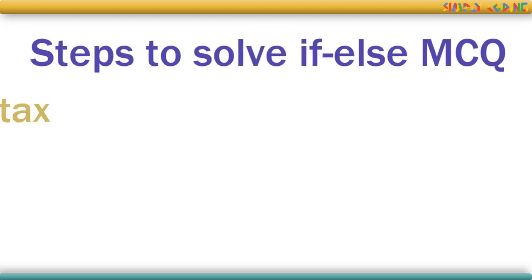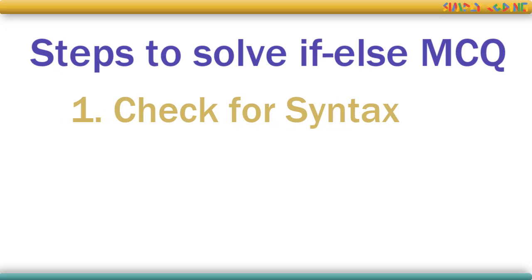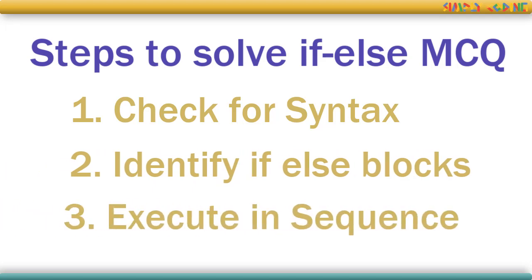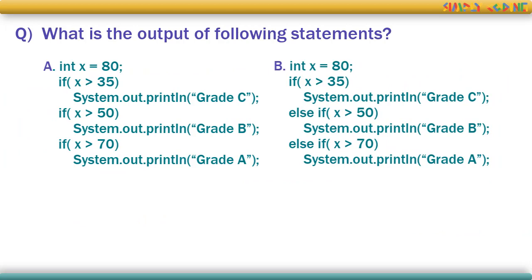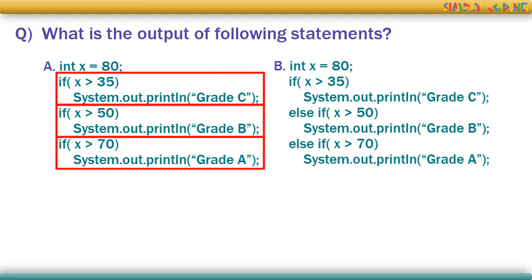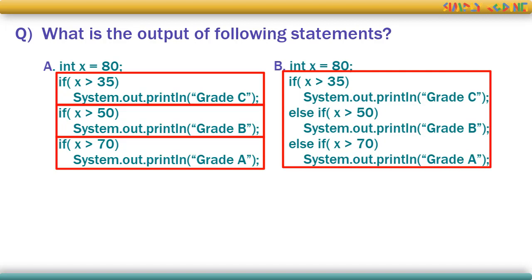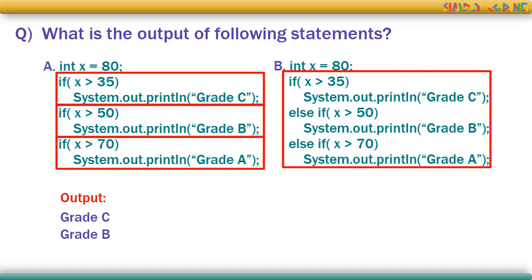After checking syntax, most MCQ programs will be output-type questions checking if you understand the exact sequence in which the if block executes. You solve it in two steps: first, identify the if-else block correctly, then execute it in sequence as per the output of the boolean expression. For example, take two pieces of code and tell us the output. The first one has separate if statements one below the other — three if statements executed in sequence. Since each is true, all three print statements will be output.